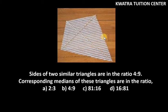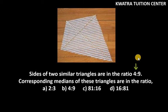The third part says: sides of two similar triangles are in the ratio 4:9. The corresponding medians of these triangles are in what ratio? The ratio of medians is the same as the ratio of the corresponding sides, so the answer is 4:9 — option B.